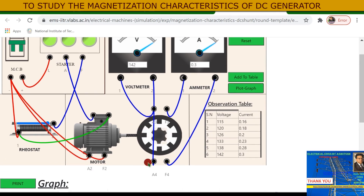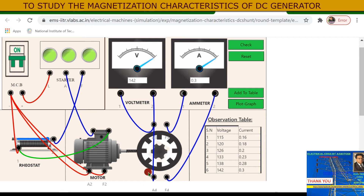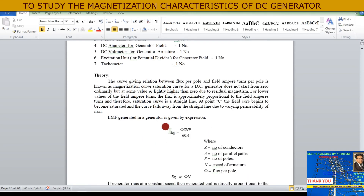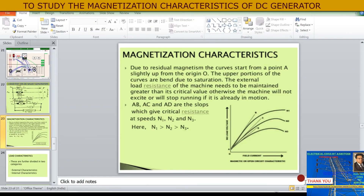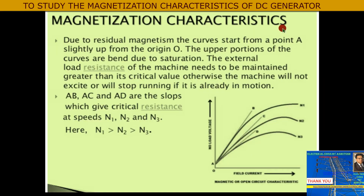When the DC generator is driven by a prime mover — like this DC motor — EMF is induced in the armature of this self-excited generator. The generated EMF in the armature is given by the expression: Eg = (P × φ × N × Z) / (60 × A). Field current is taken on the x-axis and the no-load voltage or generated EMF Eg is on the y-axis.